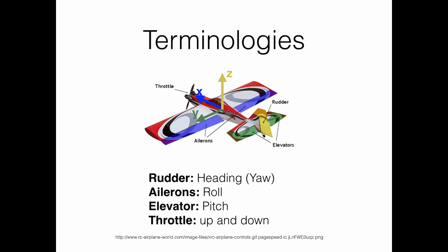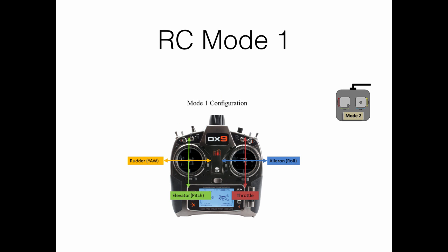However, the RC transmitter has different operation modes that depend on which stick, left or right, is assigned with the control of directions among the four possible alternatives.